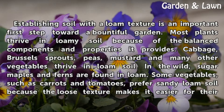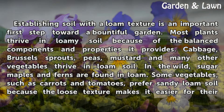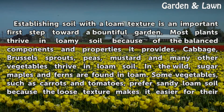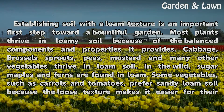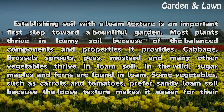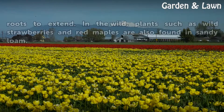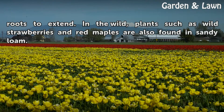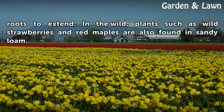Establishing soil with a loam texture is an important first step toward a bountiful garden. Most plants thrive in loamy soil because of the balanced components and properties it provides. Cabbage, Brussels sprouts, peas, mustard and many other vegetables thrive in loam soil. In the wild, sugar maples and ferns are found in loam. Some vegetables, such as carrots and tomatoes, prefer sandy loam soil because the loose texture makes it easier for their roots to extend. In the wild, plants such as wild strawberries and red maples are also found in sandy loam.